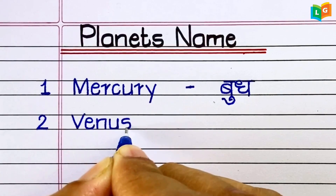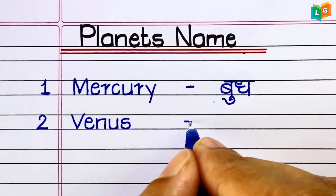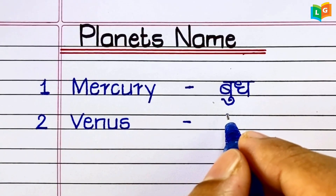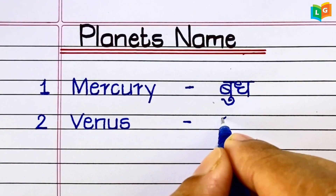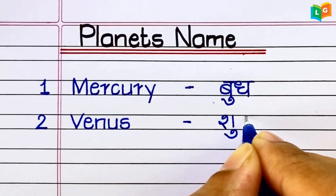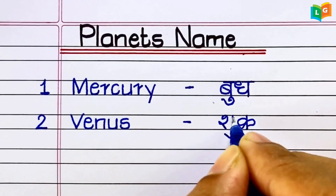Next, V-E-N-U-S, Venus. Venus means Shukra Graha.